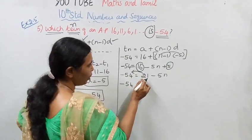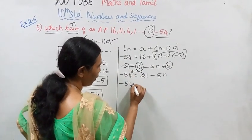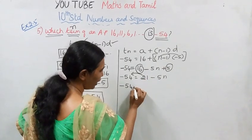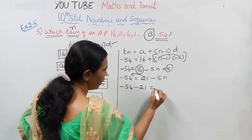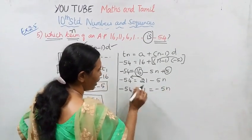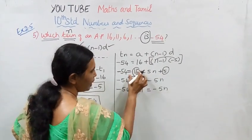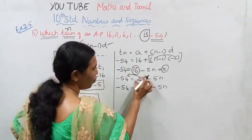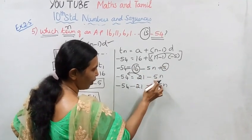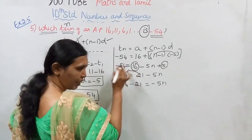Minus 54 equal to 16 minus 5N plus 5, 16 plus 5 is 21 minus 5N.